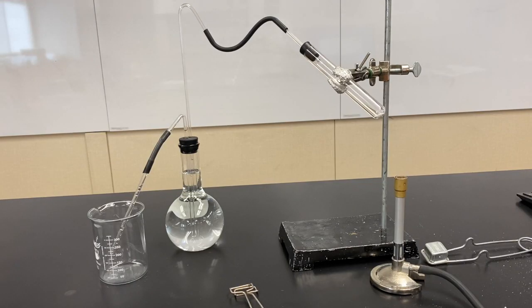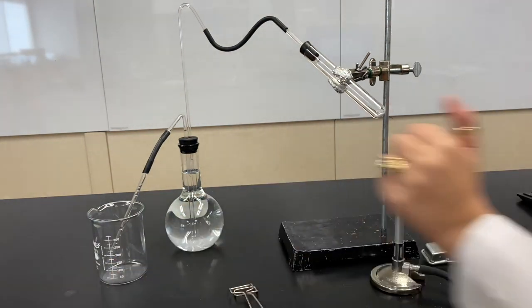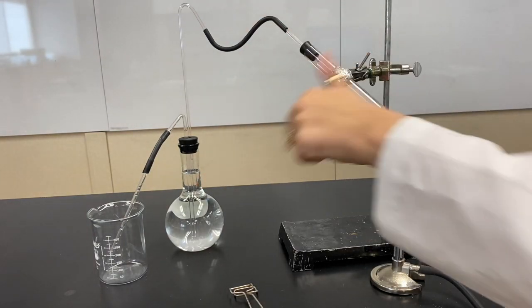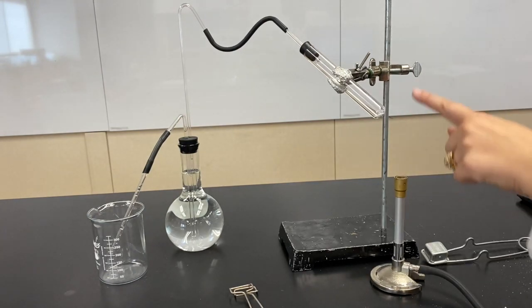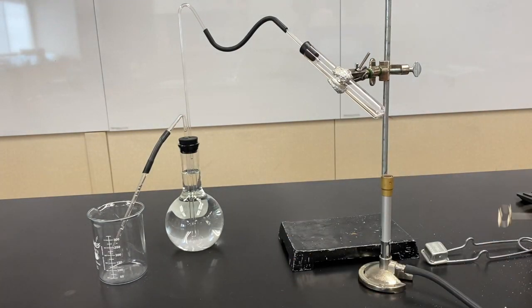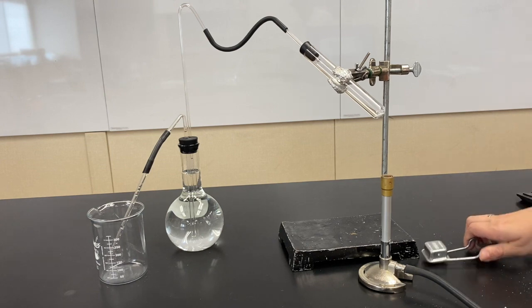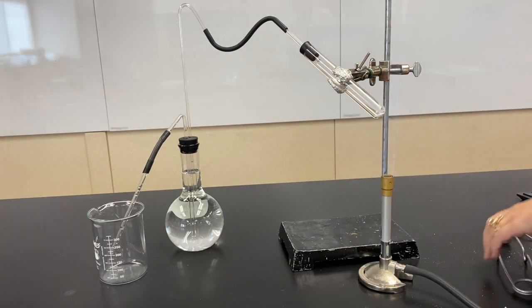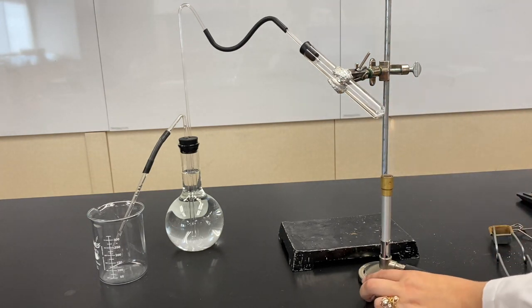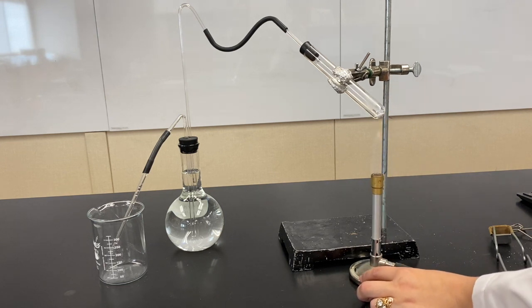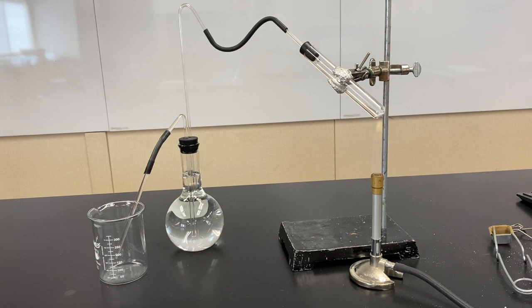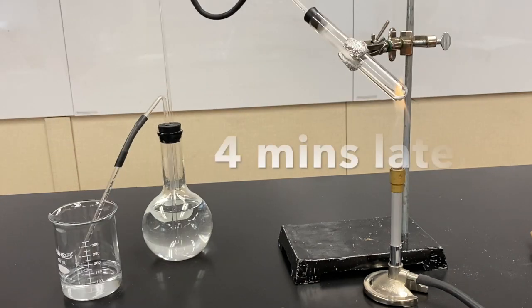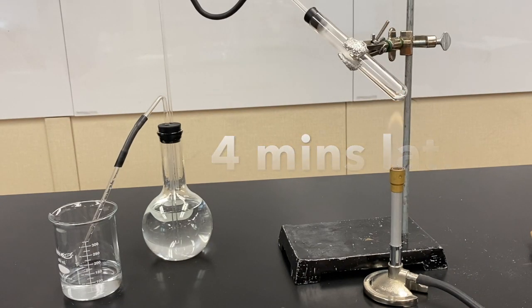So we set back up the apparatus, filled up our Florence flask with more water. Obviously, we have a new beaker so we can measure how much water is actually being produced, how much water is actually coming out of the apparatus and then we light our Bunsen burner. Here we go. And right away you see those bubbles. Water's filling up. Exciting stuff. And it stopped reacting. So we can turn off the gas.